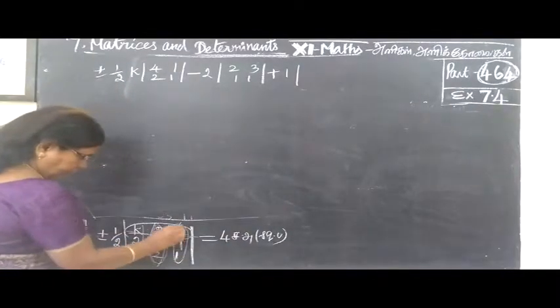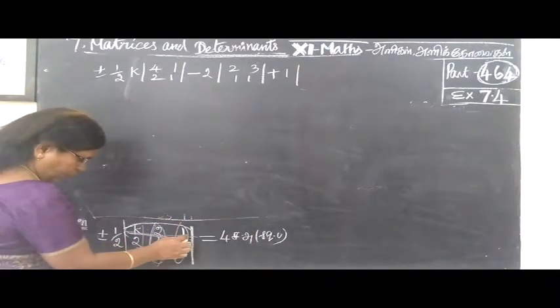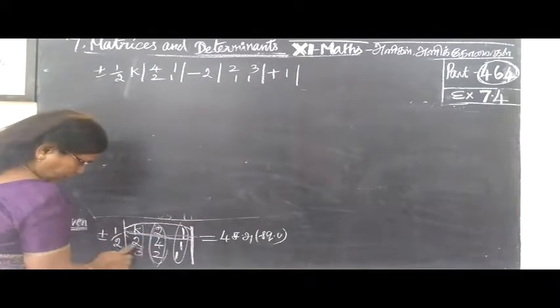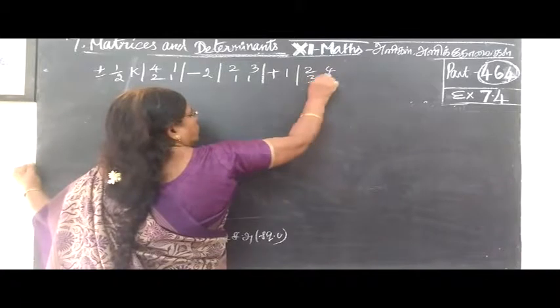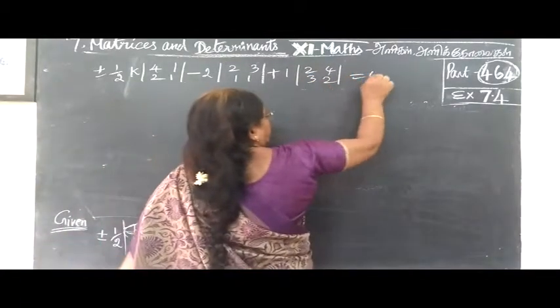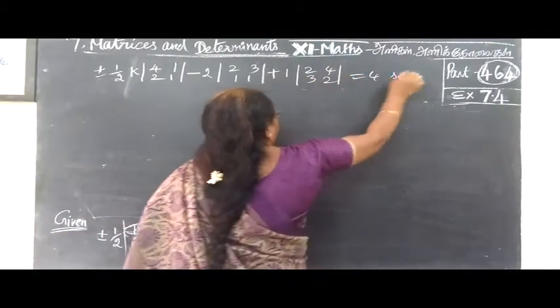It is here. See, this row, this row, this row. 2, 4, 3, 2. So 2, 4, 3, 2 equal to 4 square units.